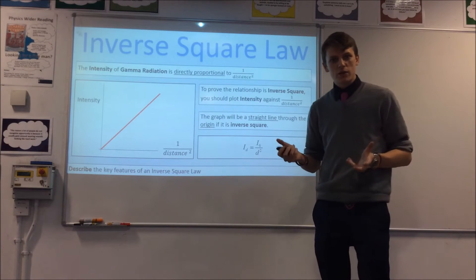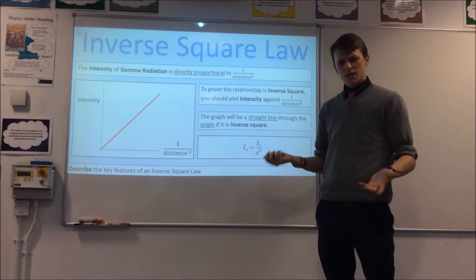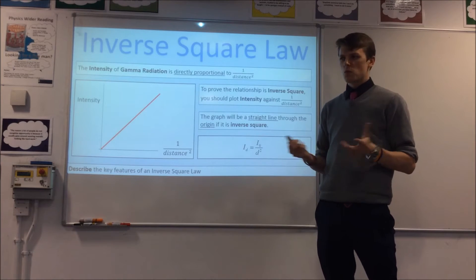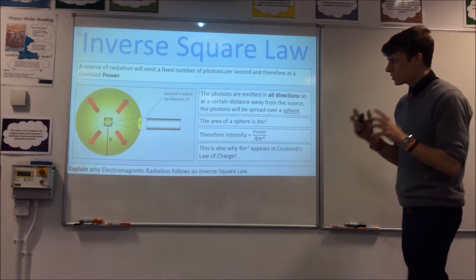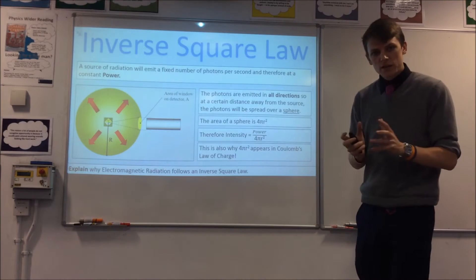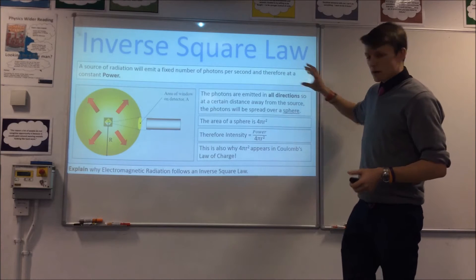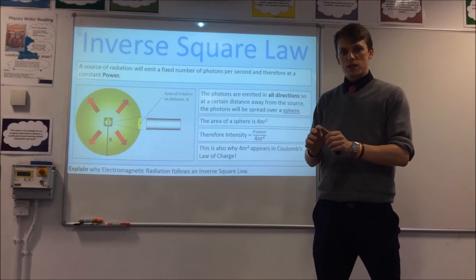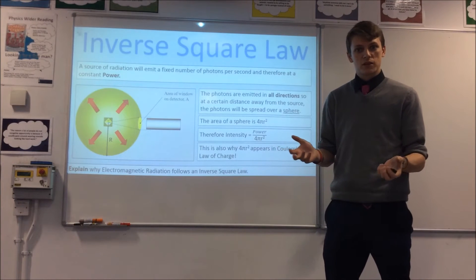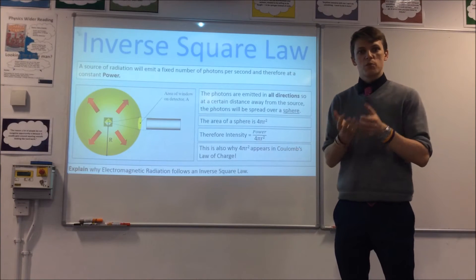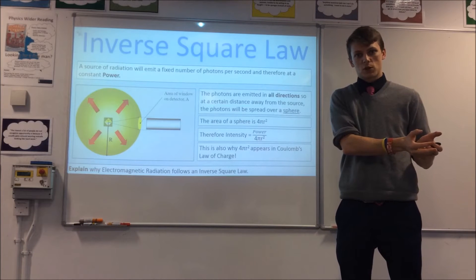Scientists found this relationship and confirmed it's an inverse square, so the next thing to think about is: why is it an inverse square — what's causing that? Essentially, you have a source of radiation that emits a fixed power. If it's light, for instance, it emits a certain number of photons per second, so its power is constant.